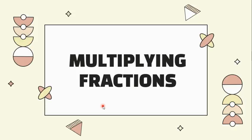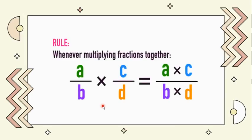Let's start off with multiplying fractions. We have here the basic rule whenever we multiply fractions together. If we have a over b being multiplied to c over d, the product is a times c all over b times d. As you can see here, we just multiply the numerators and the denominators.